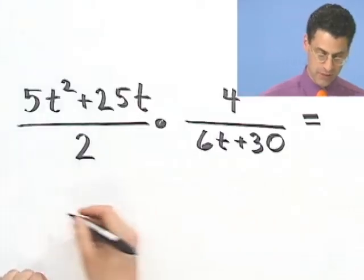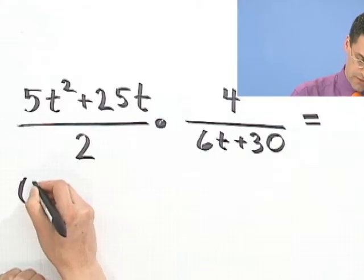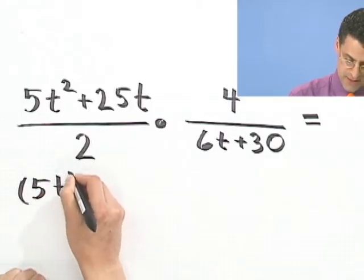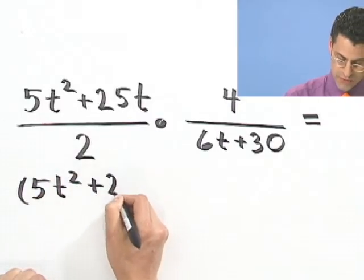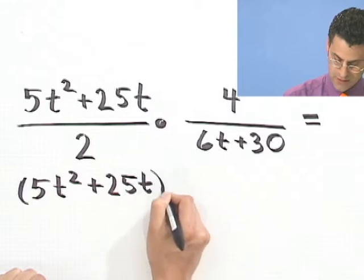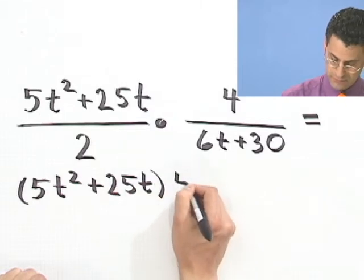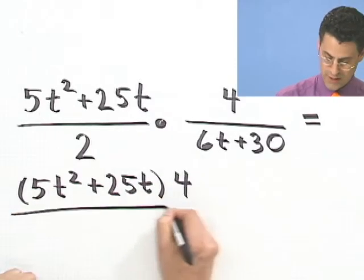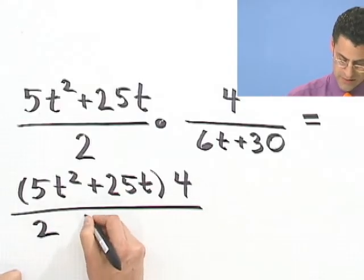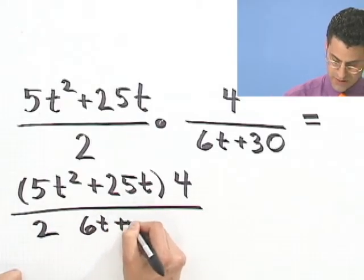OK, well, the trick is you just multiply tops and you multiply bottoms. So, in fact, you could write this out in the following way. I could say 5t squared plus 25t, all times 4, divided by 2 times 6t plus 30.